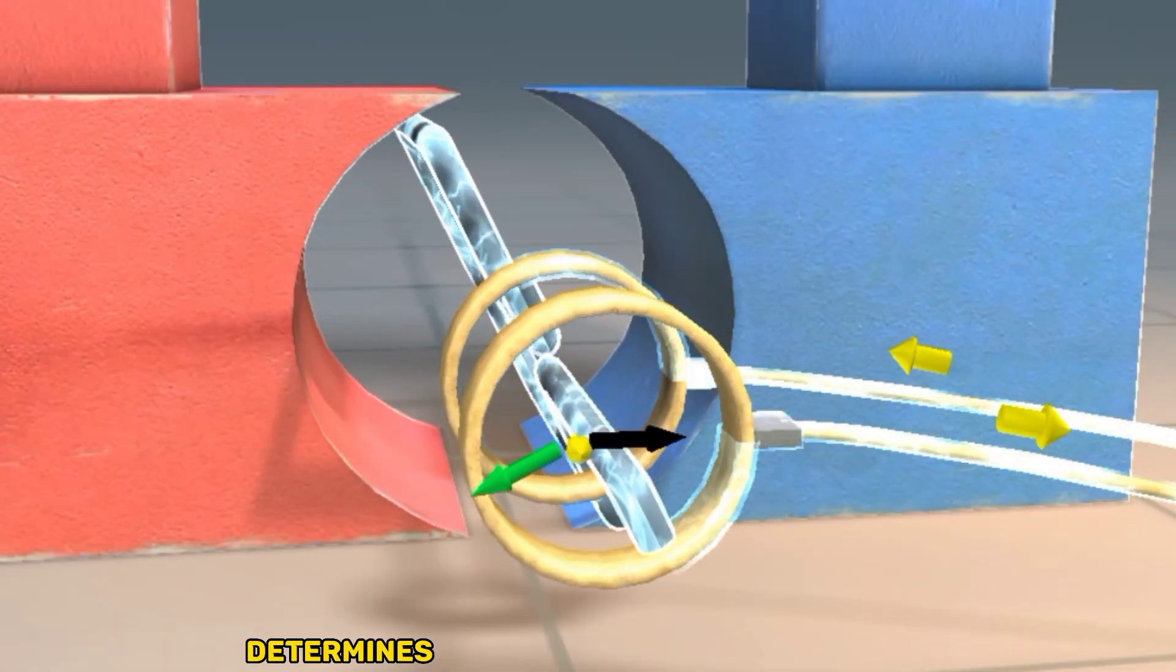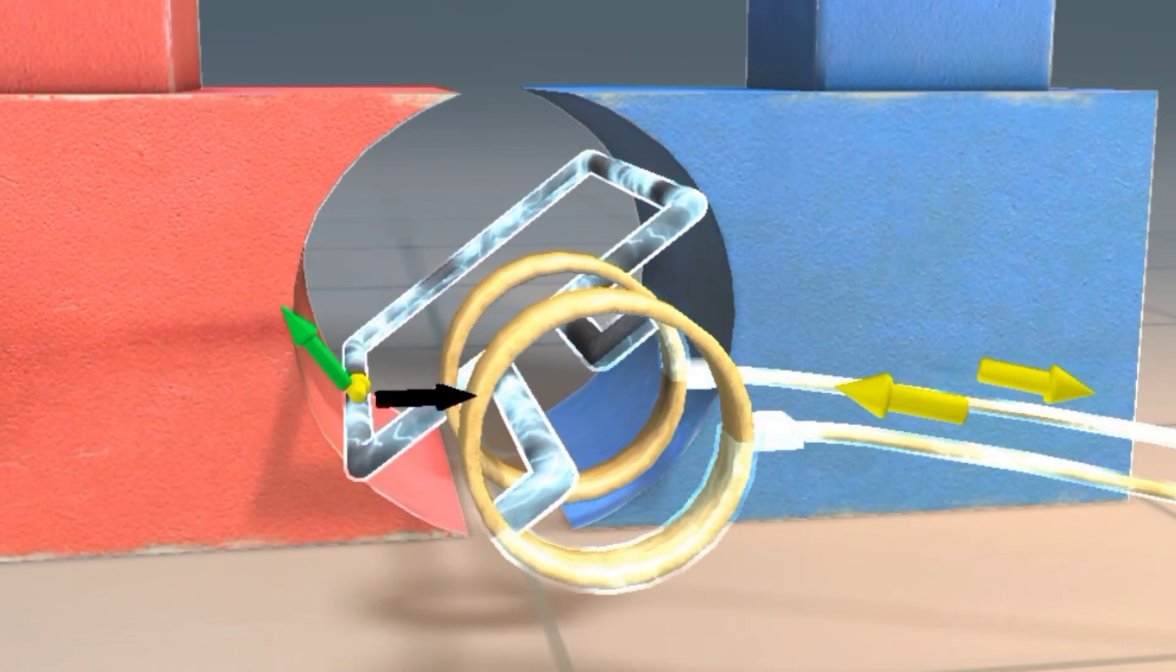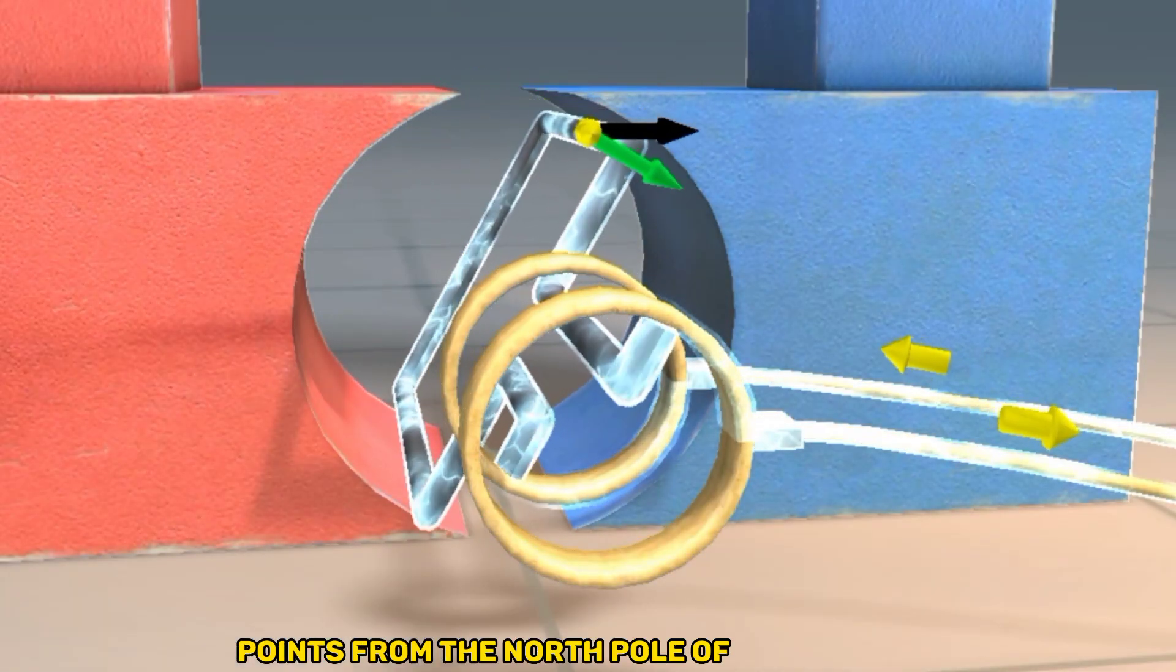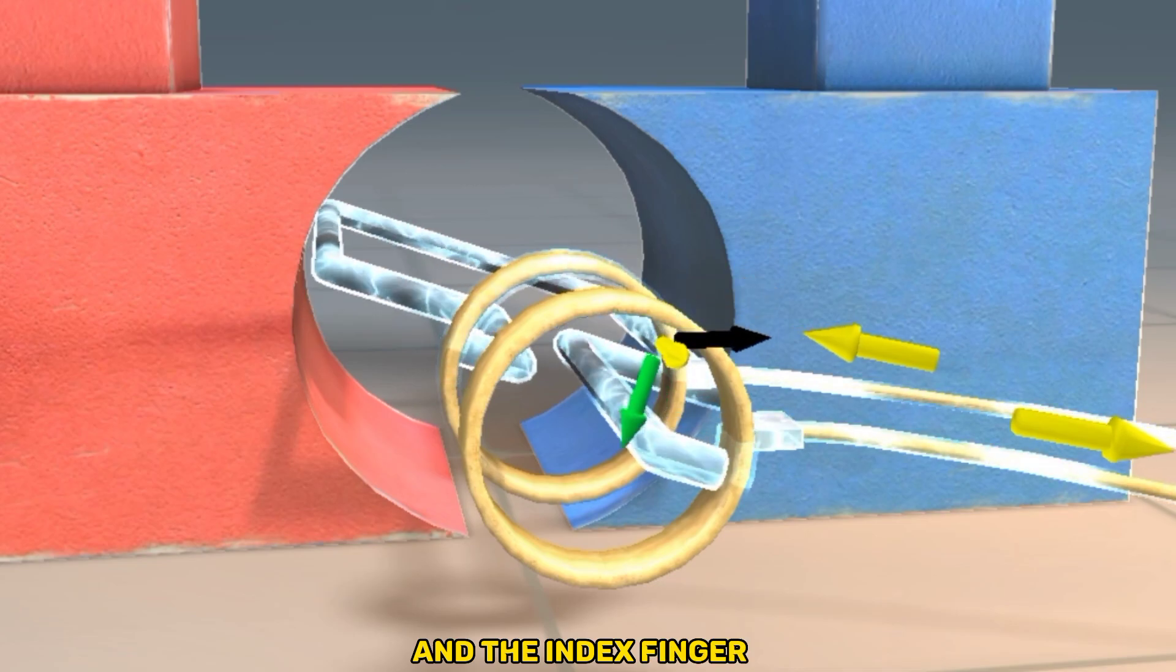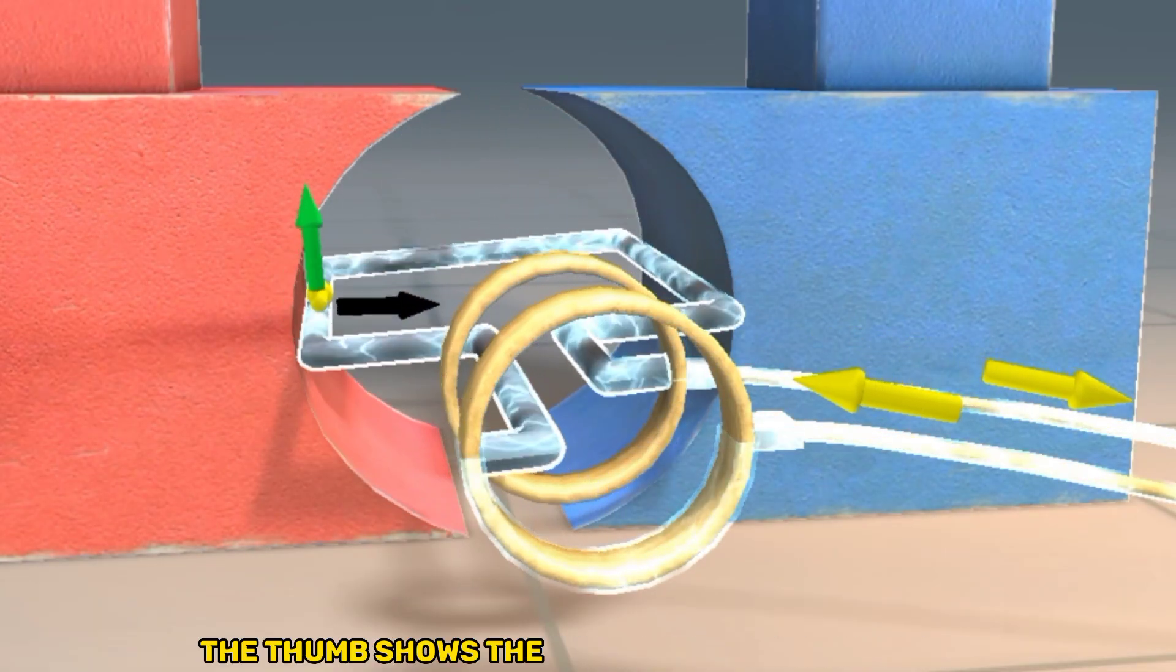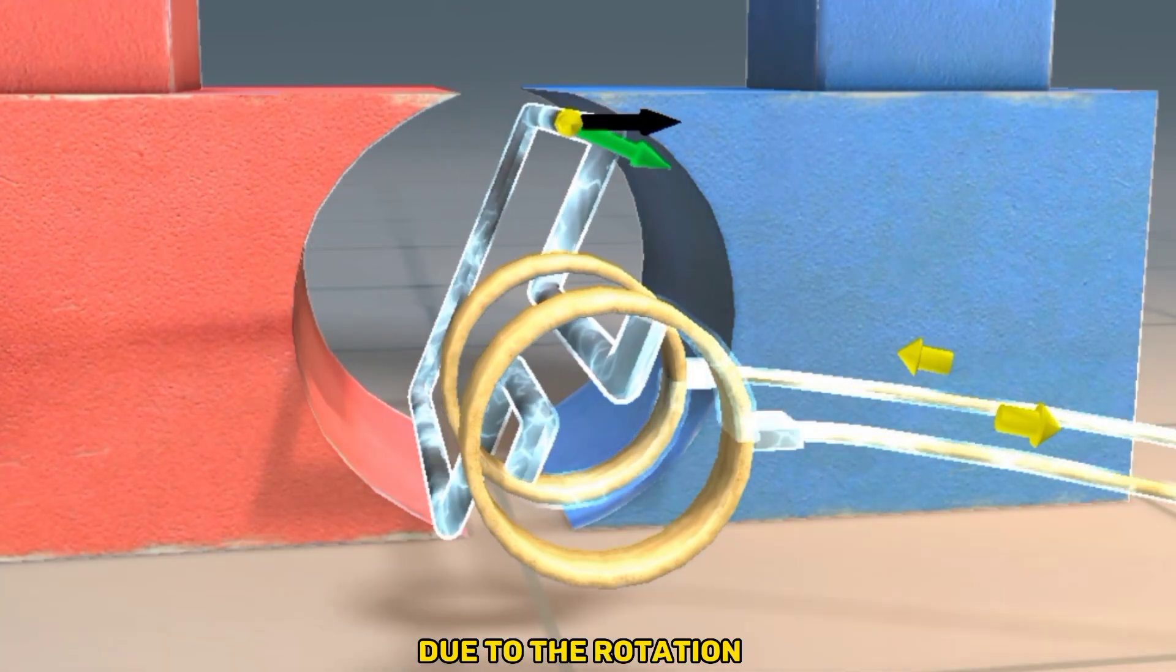The right-hand rule determines the direction of the current. When the middle finger of your right hand points from the north pole of the magnet and the index finger in the direction of the motion of the armature, the thumb shows the direction of the current.